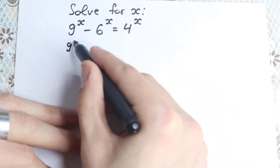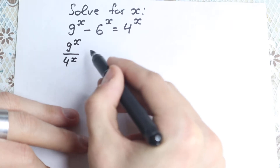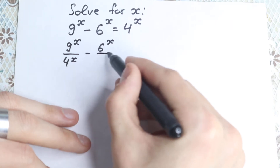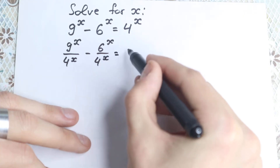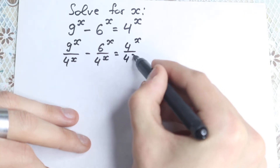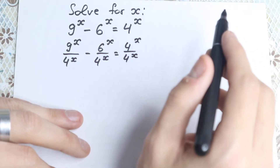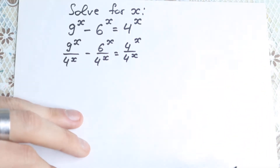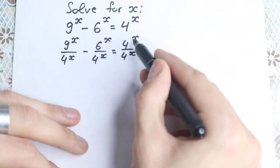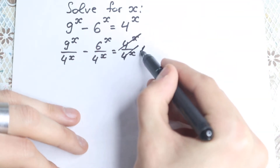We have 9 to the x over 4 to the x, minus 6 to the x over 4 to the x, equal to 4 to the x over 4 to the x. We just divided both sides by 4 to the x, so nothing changed. And 4 to the x over 4 to the x equals 1, so we can easily cancel this.